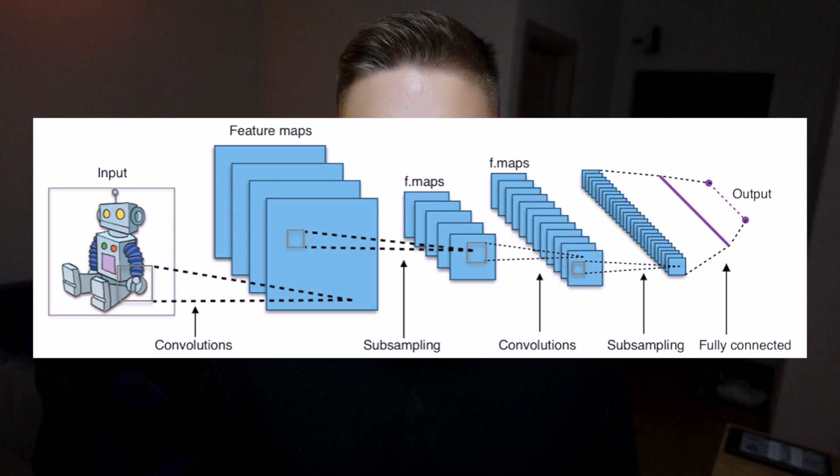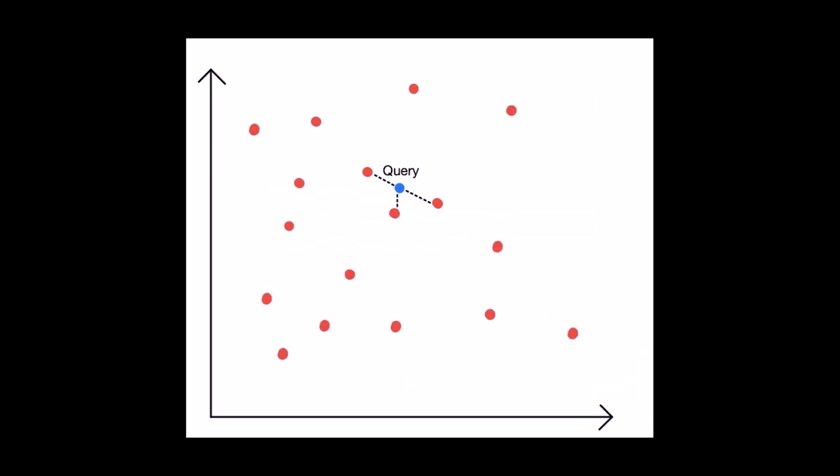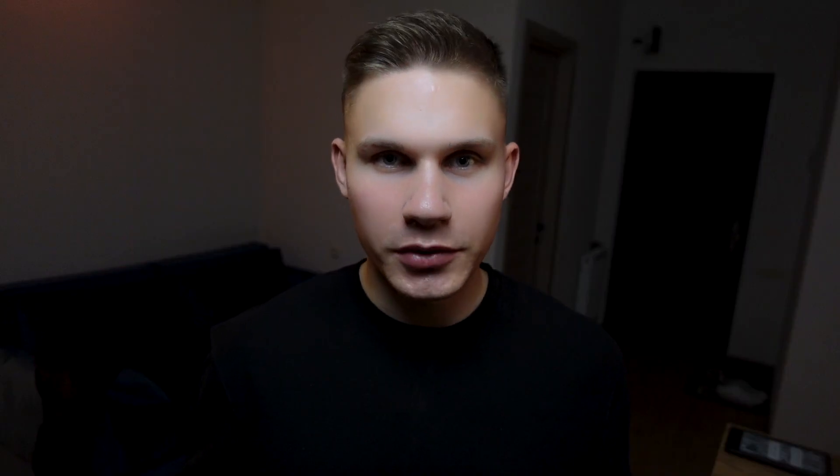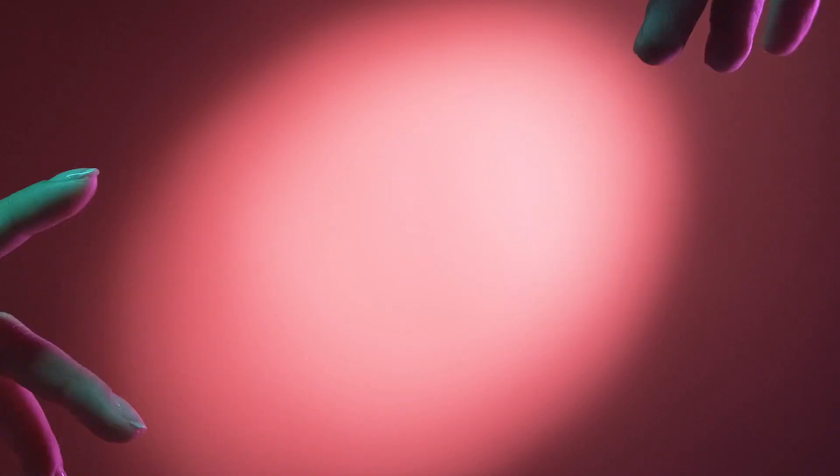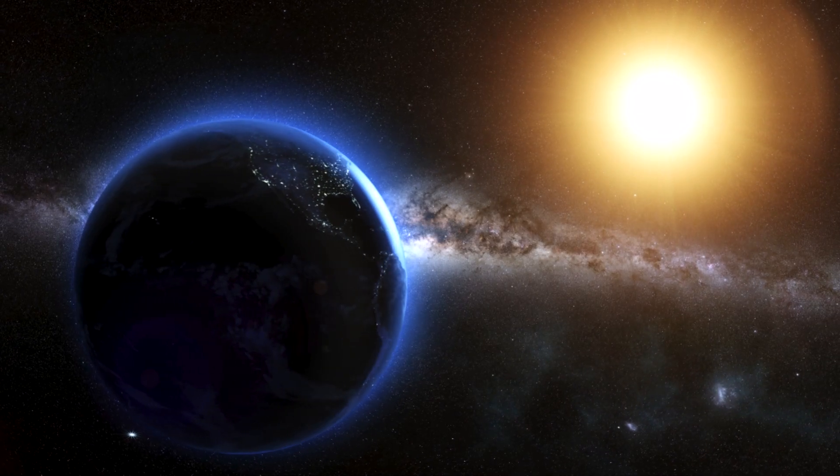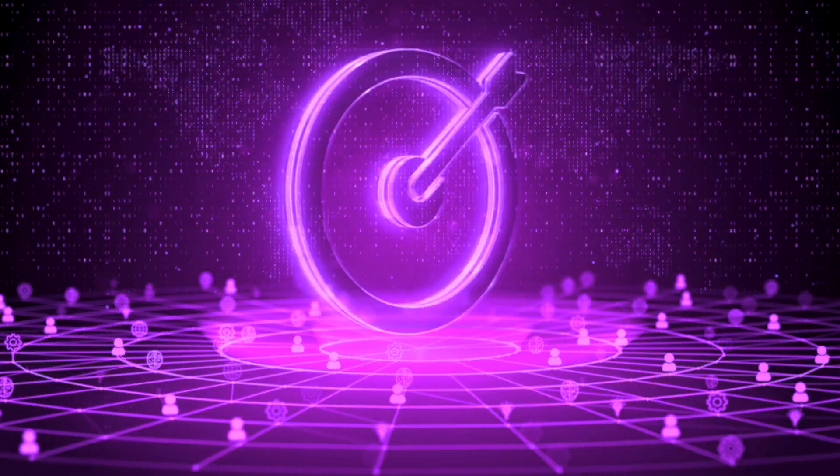Semantic similarity search is a process that compares embeddings to each other. For example, you can compare the embedding of the user's query to all other embeddings in your database to quickly find the most relevant items. What sets this approach apart from traditional searches is that items are matched based on their underlying context rather than on specific keywords. For example, if a question asks about the orbit of the sun but substitutes the word 'sun' with 'a massive ball of fire', a semantic search is still likely to locate the relevant text defining the sun's orbit.